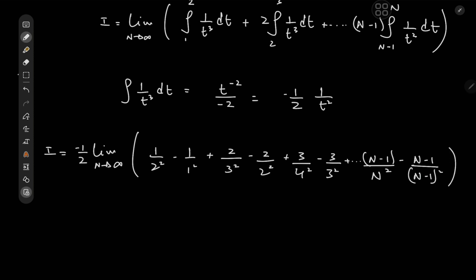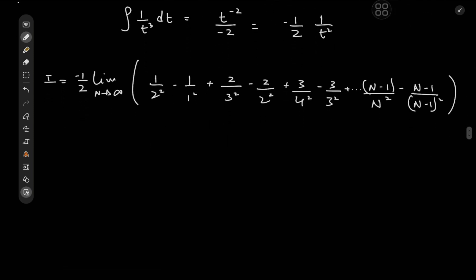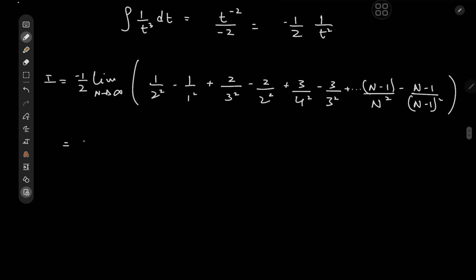And this does not look like any summation pattern that we're familiar with. But all of that can change by just collecting together the right terms. So we have negative 1 half times this limit of what exactly? You see we have 1 over 2 squared and also we have negative 2 over 2 squared. So this would of course yield negative 1 over 2 squared. And wait, we have this negative 1 over 1 squared just minding its own business.